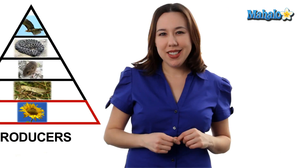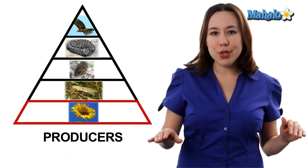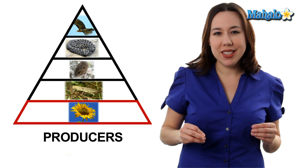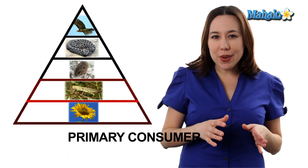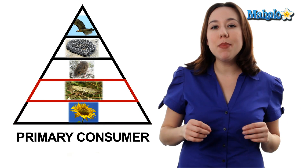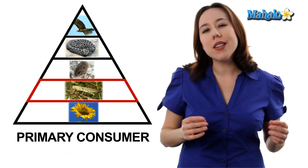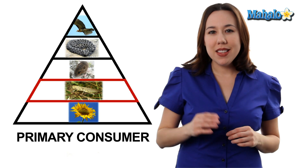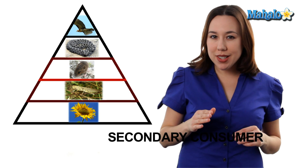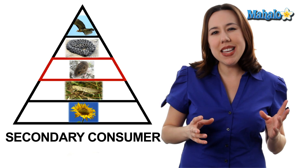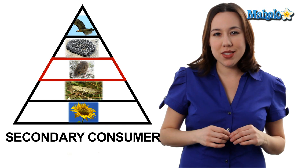Let's use a real world example to illustrate our concept here. We're going to start at the bottom with our producers — let's use a sunflower. This sunflower is going to be eaten by a primary consumer; we'll say a grasshopper. This grasshopper is then going to be eaten by a secondary consumer, let's say a field mouse.